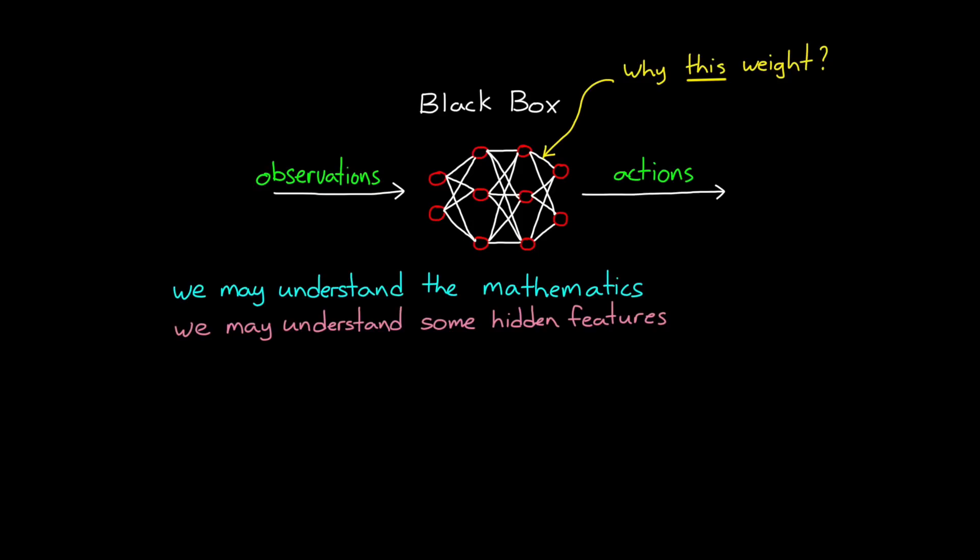So if the policy doesn't meet a specification, or if the plant or the rest of the operating environment changes, how do you adjust the policy to address that? Which weight or bias do you change?